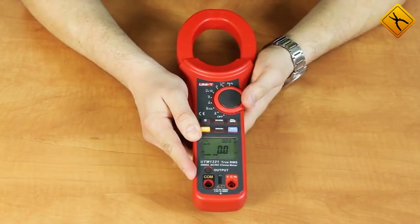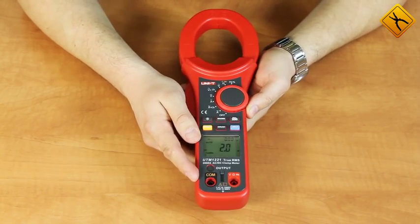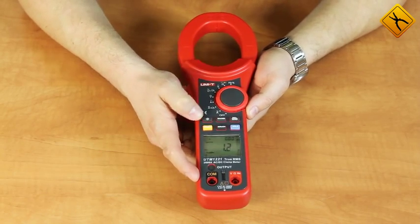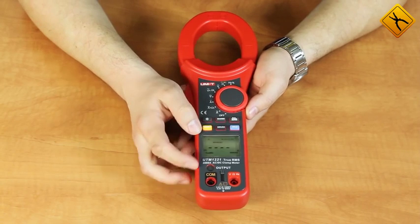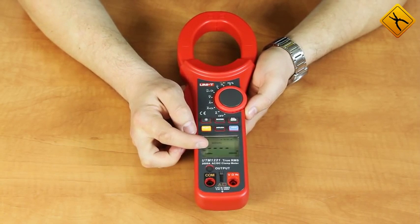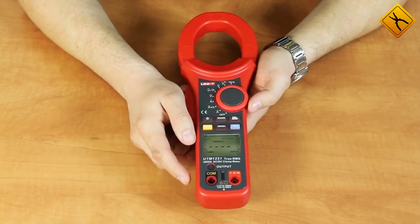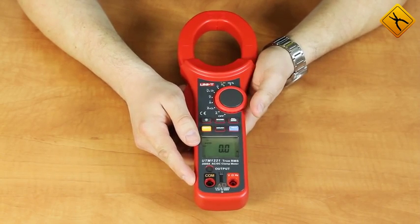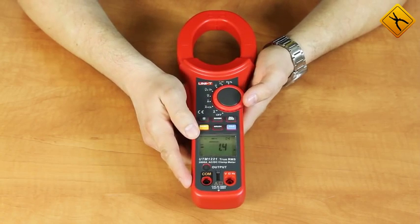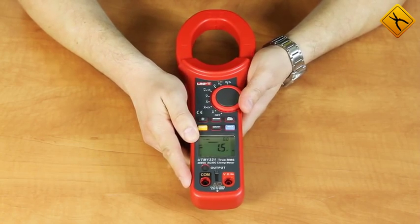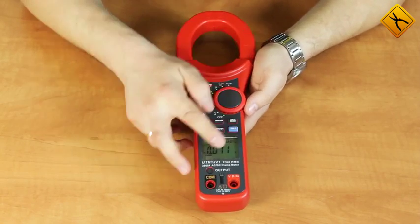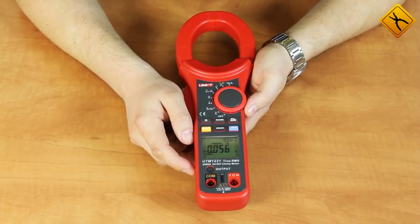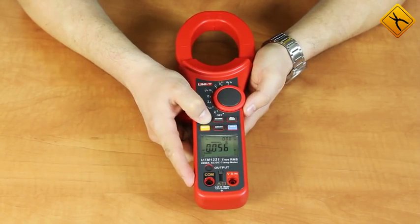There are additional functions. At AC current measurement, you may use a function of inrush starting current measurement. The main display shows the current value and the additional one shows inrush starting current. Maximum minimum function is also available, relative measurements, data hold function, and a display backlight.